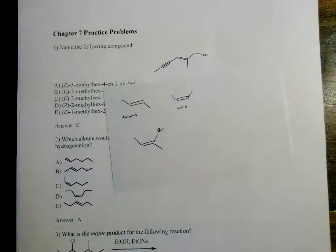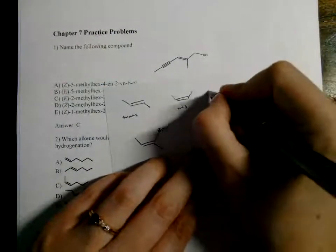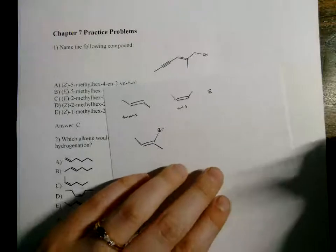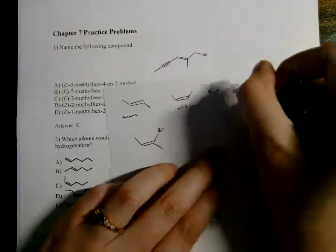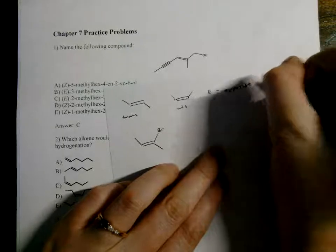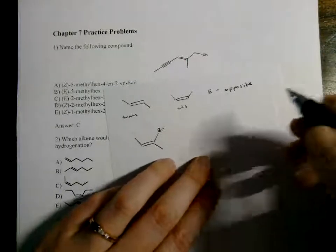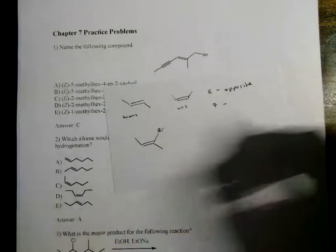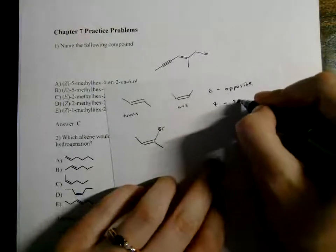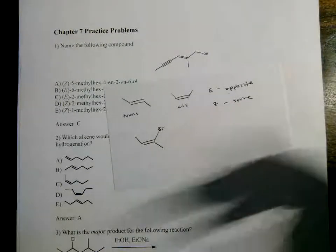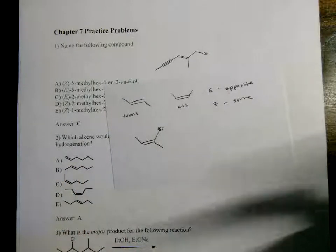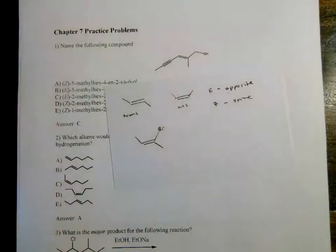E is the German word — I think 'entgegen' — meaning opposite. Both E and opposite start with vowels, so that's easier to remember. Z is the German word 'zusammen,' meaning same. So I think: Z = same. If the higher priorities are on the same side, that's Z. If the higher priorities are on opposite sides, that's E.